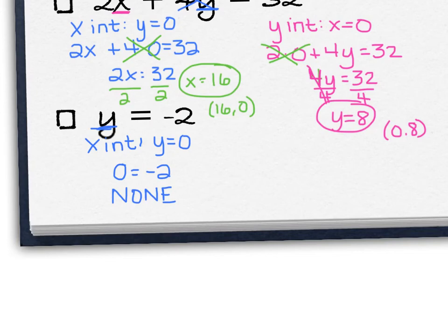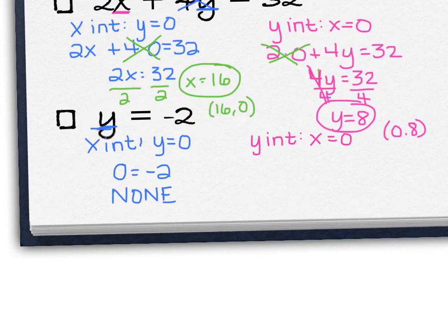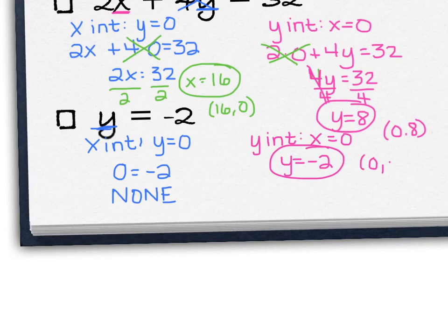Let's look at the y-intercept. For the y-intercept, I would make x equal to 0. Notice when I go back to plug it in, I don't have a place to plug in 0 for x. So what I have to think about is when x equals 0, what would y equal? Remember what this equation says — y equals negative 2 no matter what x equals; x can be anything and y is always negative 2. So your y-intercept is just negative 2, and as a coordinate that would be 0, negative 2.